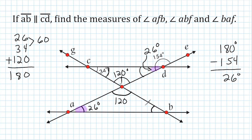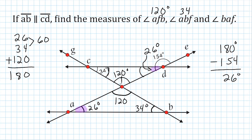So the measure of angle AFB is 120 degrees. The measure of angle ABF is 34 degrees. And the measure of angle BAF is 26 degrees. To verify our results, we should add those three angles together — they should always sum to 180 degrees, which we already confirmed with the three angles of the original triangle.